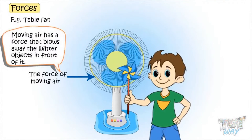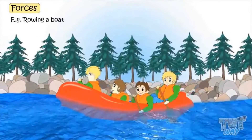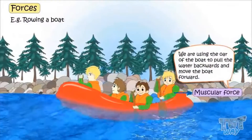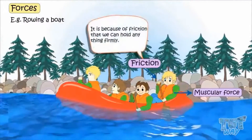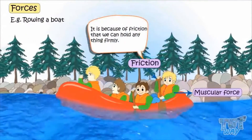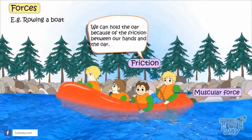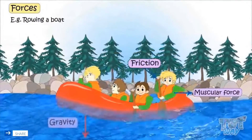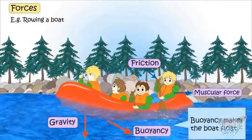And here are the forces acting while rowing a boat. Muscular force: we use muscular force to move the oar of the boat, pulling the water backwards and moving the boat forwards. Friction: it is because of friction that we can hold anything firmly — we can hold the oar because of friction between our hands and the oar; if the oar or the hands are slippery, we cannot hold it. Gravity pulls the boat downwards. Buoyancy makes the boat float.